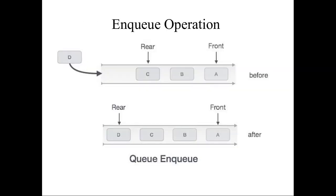I have given a diagram to understand the enqueue operation. Consider this as a queue having elements A, B, C. If you want to insert data D, you have to insert it at the rear end. This is the front end and this is the rear end. The enqueue operation is performed at the rear end, so D will be added after C. Once inserted, the queue will look like this.